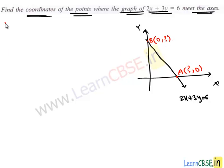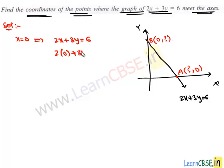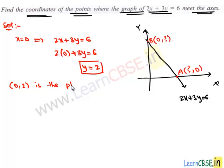So let's work out the problem. By substituting x is equal to 0, we get point B. We have the equation 2x plus 3y is equal to 6. On substituting x is equal to 0, we have 2 times 0 plus 3y is equal to 6, giving y is equal to 2. Therefore, (0, 2) is the point where the graph of 2x plus 3y is equal to 6 cuts the y-axis.